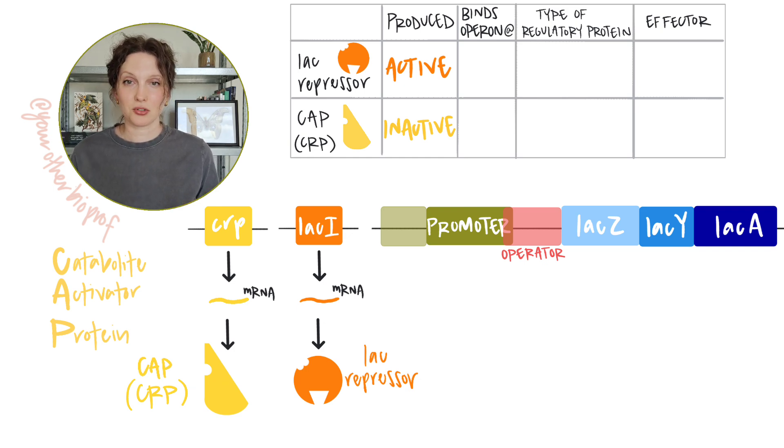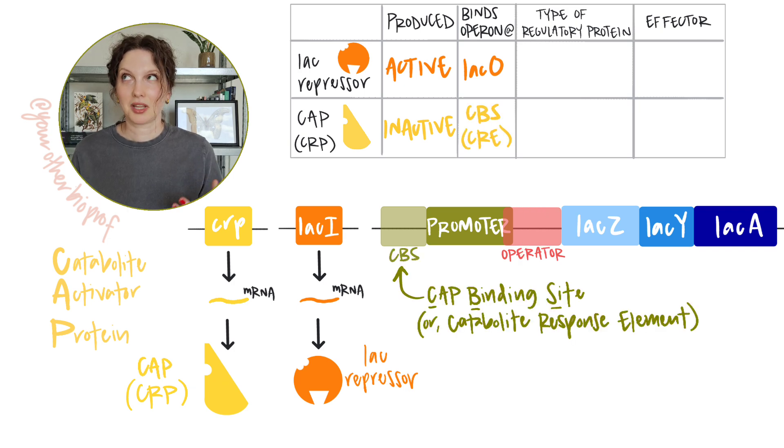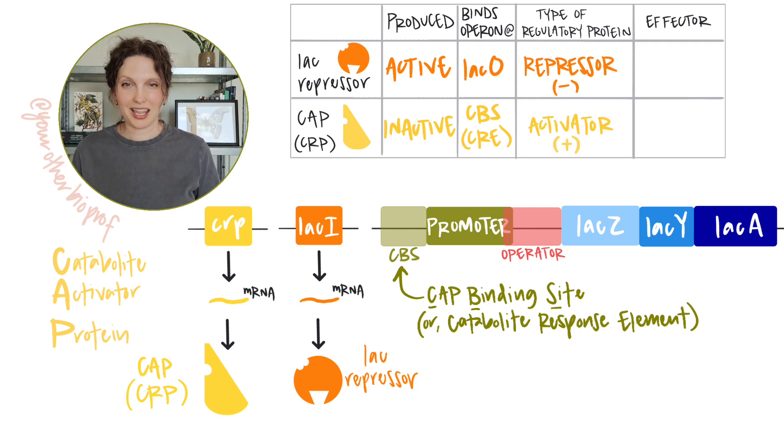Secondly, active CAP binds to the lac operon, not at the operator, but at a location called the CAP binding site. Finally, a name that makes sense, right? That CAP binding site is going to be just upstream of the promoter. Binding of that active CAP to the CAP binding site is going to have a positive effect on expression of the lac operon. We'll see why when we look at an example. But the CAP protein is an activator in contrast to the lac repressor protein.